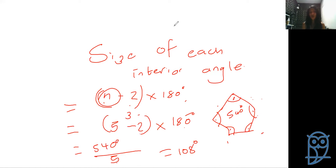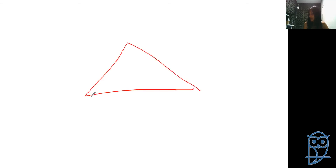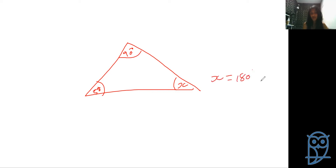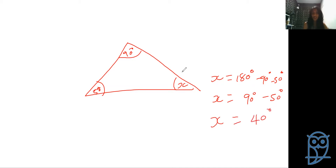Quick recap: for a triangle, interior angles add up to 180 degrees. If a shape has angles of 90 degrees and 50 degrees, and we need to solve for x: x equals 180 degrees minus 90 degrees minus 50 degrees. So x equals 180 minus 90, which is 90, minus 50 degrees - x is therefore equal to 40 degrees.